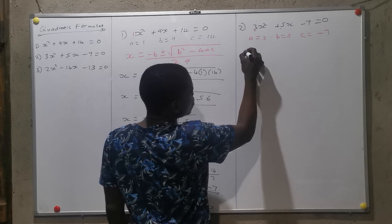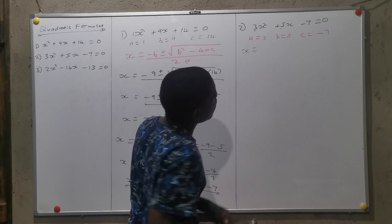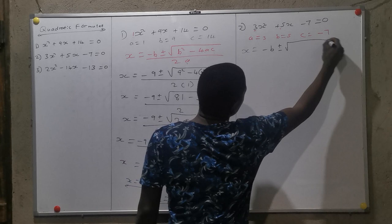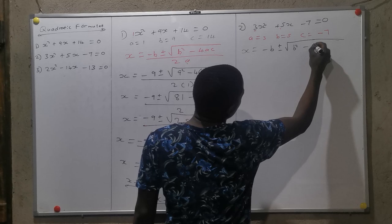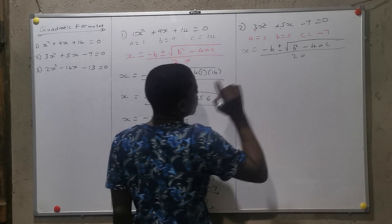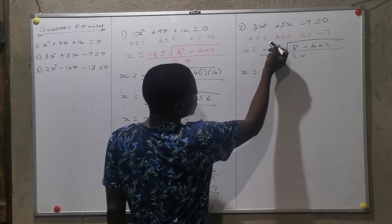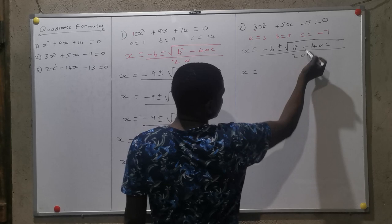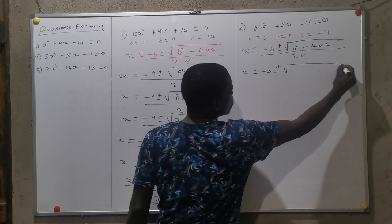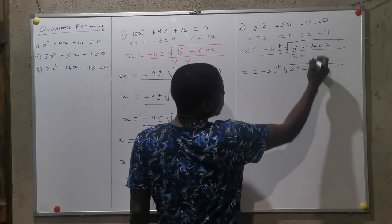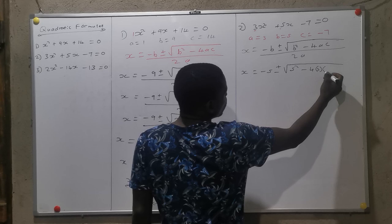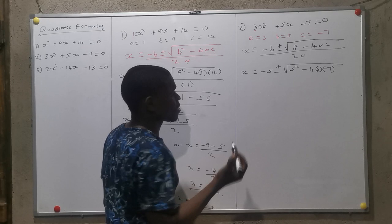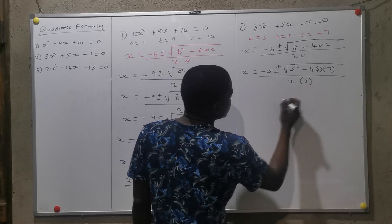Then I write my formula: X is equals to minus B plus or minus the square root of B squared minus 4AC, over 2A. Now I substitute. It's minus negative 5, plus or minus the square root of 5 squared minus 4 times 3 times minus 7, over 2 times 3.